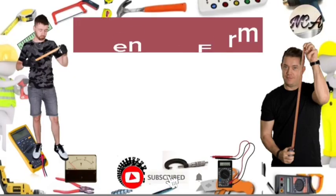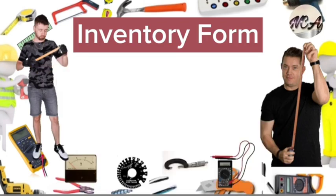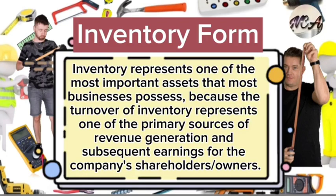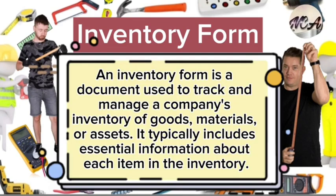The second type of form is the inventory form. Inventory refers to raw materials, work-in-process goods, and completely finished goods that are considered a portion of a business's assets that are ready or will be ready for sale. Inventory represents one of the most important assets that most businesses possess, as the turnover of inventory represents one of the primary sources of revenue generation and subsequent earnings for the company, shareholders, or owners. An inventory form is a document used to track and manage a company's inventory of goods, materials, or assets, and typically includes essential information about each item.